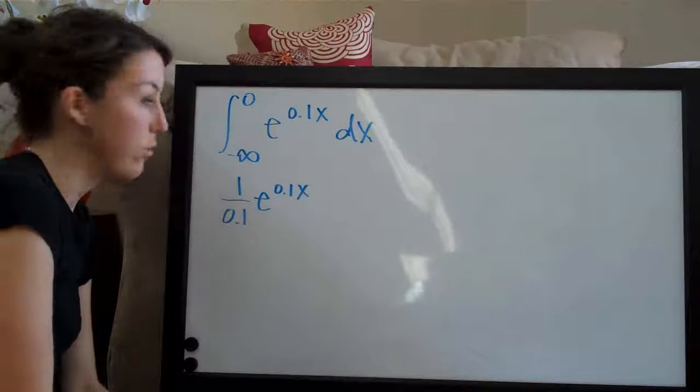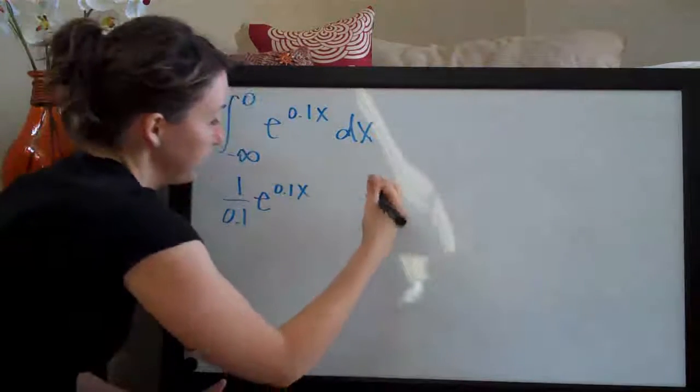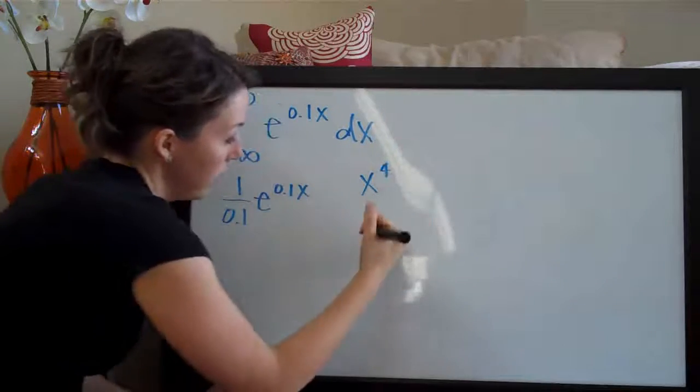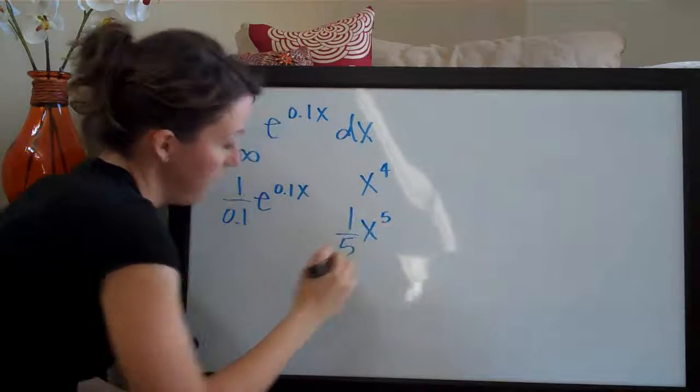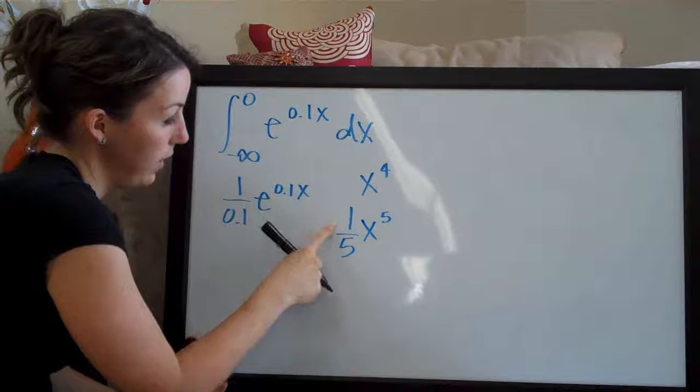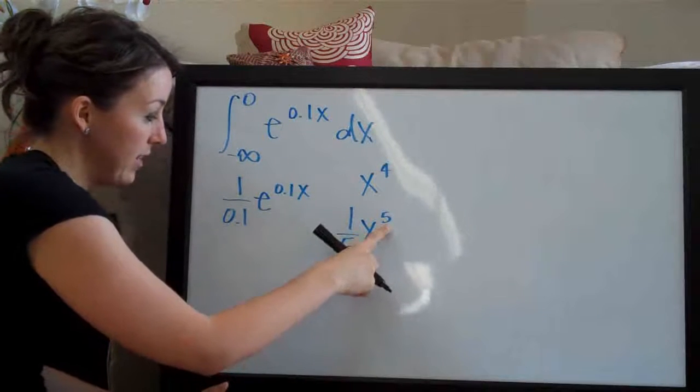Just like you would if you had x to the fourth, the integral would be x to the fifth. And then you'd divide the coefficient one by whatever the exponent is here, five.